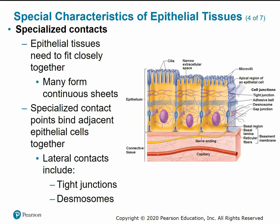Epithelial tissues have specialized contacts. Cells need to fit very tightly together to form continuous sheets. Tight junctions are like the stitching of adjacent cell membranes together. Desmosomes are more like a velcro attachment — cells are still physically connected but have a little more give to them.